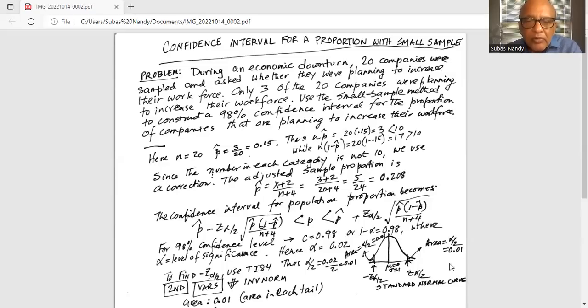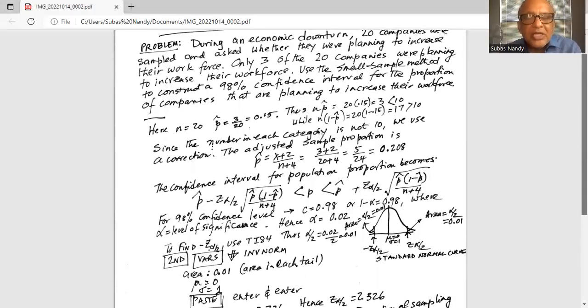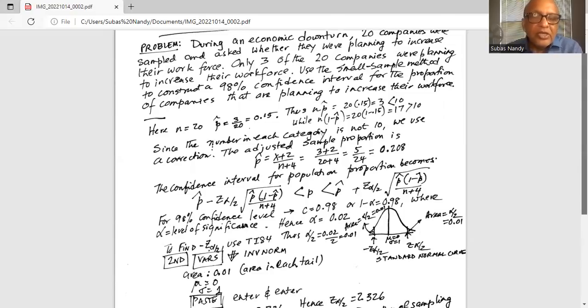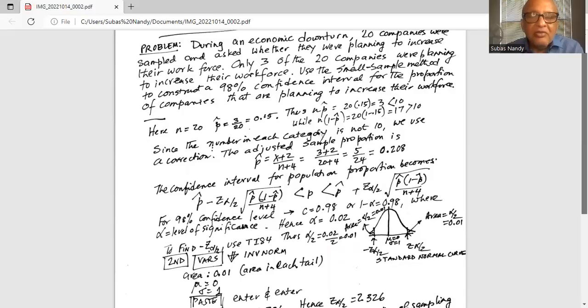The confidence interval for population proportion now becomes: the lower limit is p-hat minus z alpha by 2 times square root of p-hat times 1 minus p-hat divided by n plus 4. The quantity inside the square root is actually the standard error, or the standard deviation of the sampling distribution of p-hat. And z alpha by 2 is the critical value of z for a particular level of confidence.